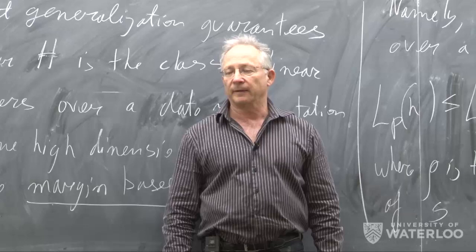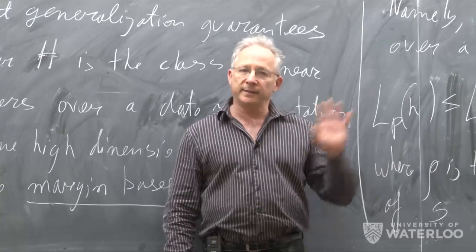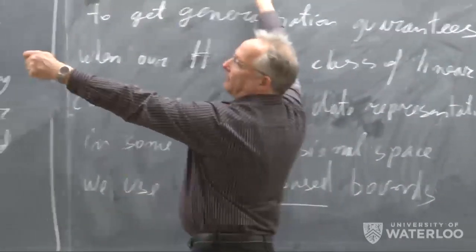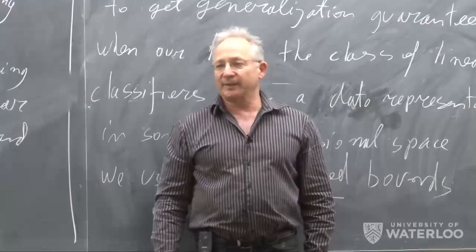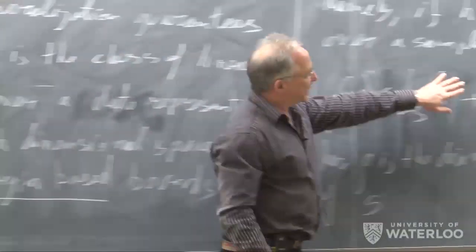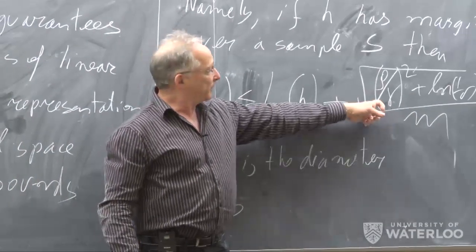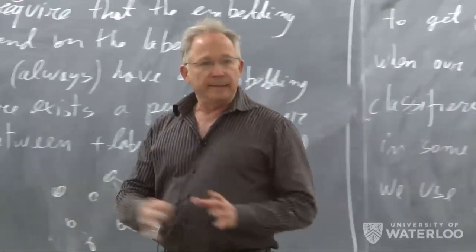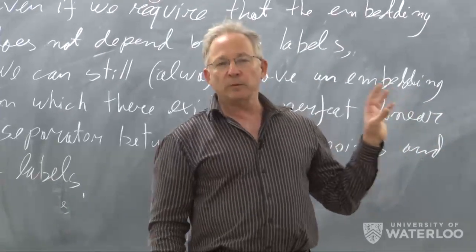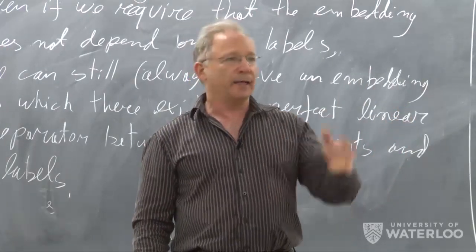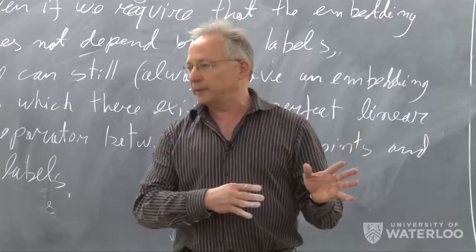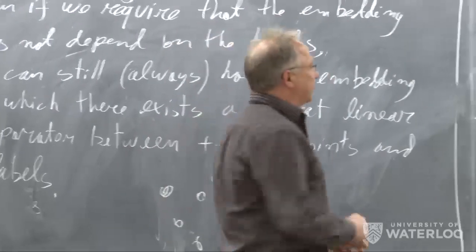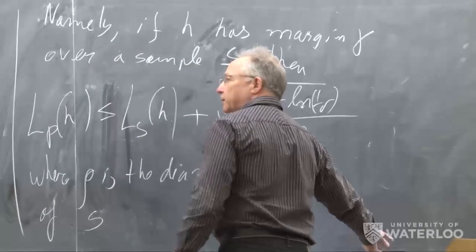The diameter ρ is in the new embedding space — everything is computed after the embedding. This saves us in terms of sample complexity if we achieve good margins after embedding. But we still have the problem of computational complexity: running time depends on dimension, and in practice we embed data into spaces that are not only high-dimensional but potentially infinite-dimensional. The trick that solves this is called the kernel trick, and that's what turned SVMs into such a popular and useful technique.